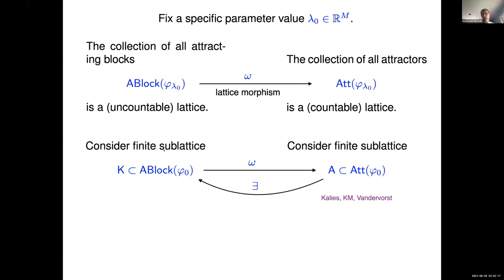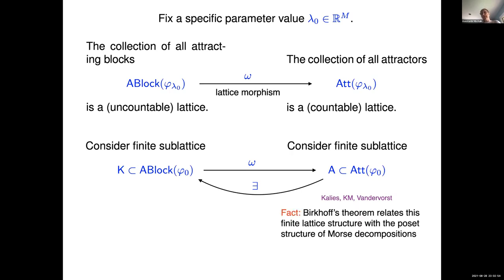This is a talk about numerics and solving differential equations, so there's no way I can work with an infinite collection of items. I want to restrict to looking at finite subsets. If you hand me a finite sub-lattice of attracting blocks and use this lattice morphism, you must end up with a finite sub-lattice of attractors. A Morse decomposition and a finite sub-lattice of attractors are effectively exactly the same thing, and Birkhoff's theorem is what tells us we can go back and forth between these two structures.